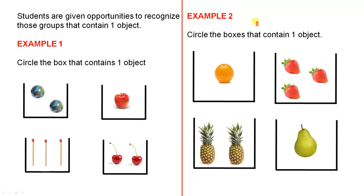The next example, circle the boxes. You would tell them that there's more than one answer. They have to circle more than one box that contain one object. So they'll be looking carefully, and they'll be circling that box there, and they'll be circling this box here.